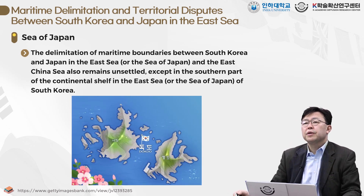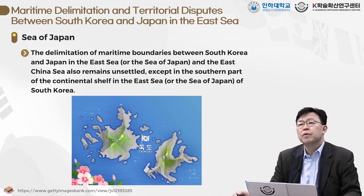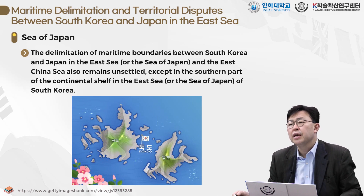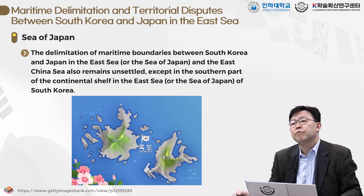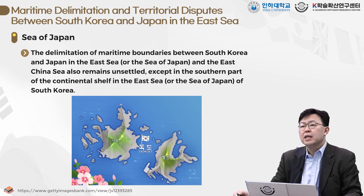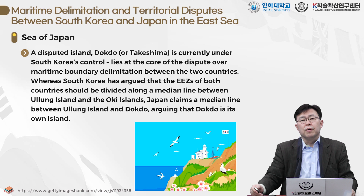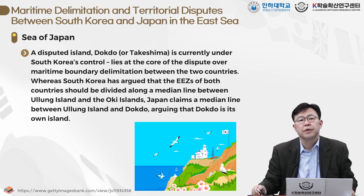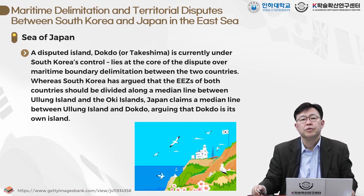The delimitation of the maritime boundary between Korea and Japan in the East Sea and the East China Sea also remains unsettled, except in the southern part of the continental shelf in the East Sea of Korea. Prompted by the need for exploitation of oil on the continental shelf, Korea and Japan agreed to jointly develop the disputed continental shelf south of Jeju Island in 1974, in addition to the delimitation of the continental shelf in the Korean Strait. The disputed island of Dokdo, which is located in the East Sea and is currently under Korea's control, lies at the core of disputes over maritime boundary delimitation between the two countries.